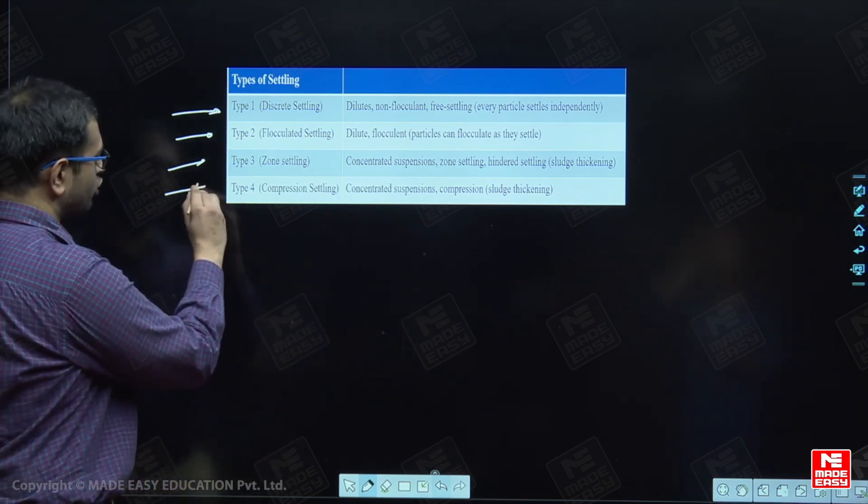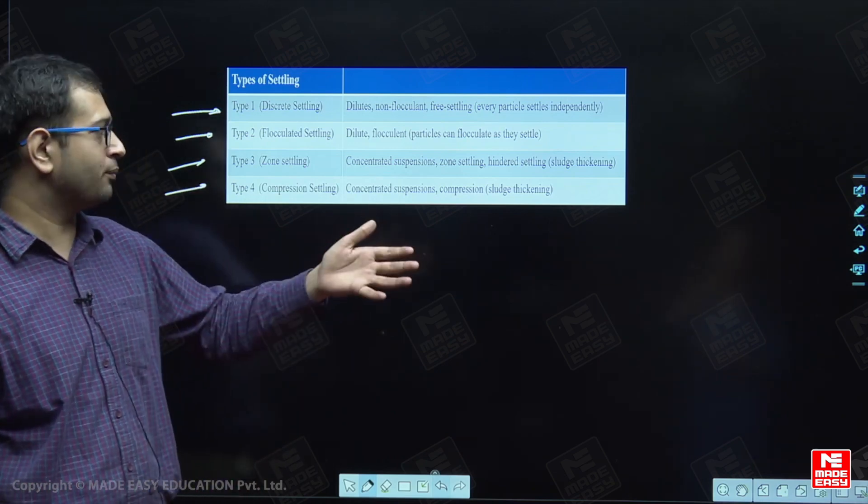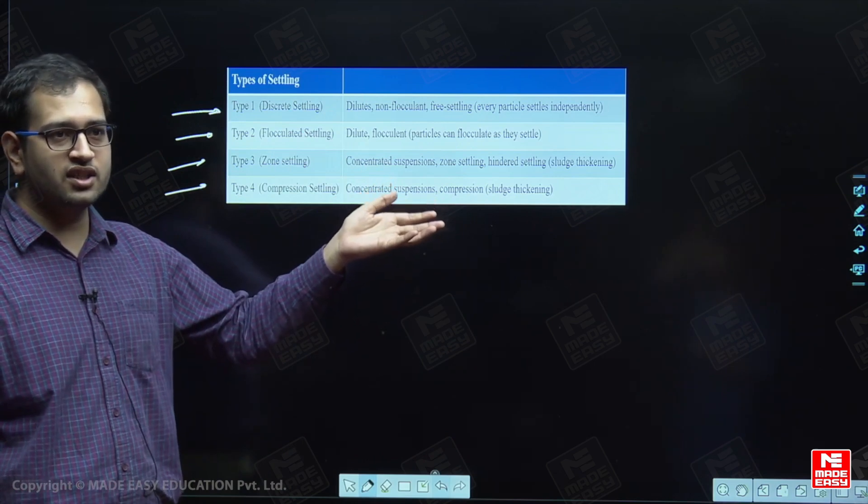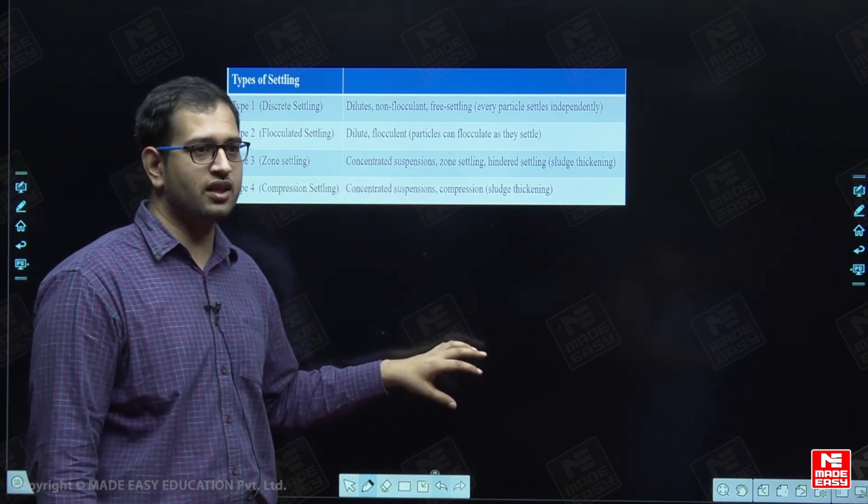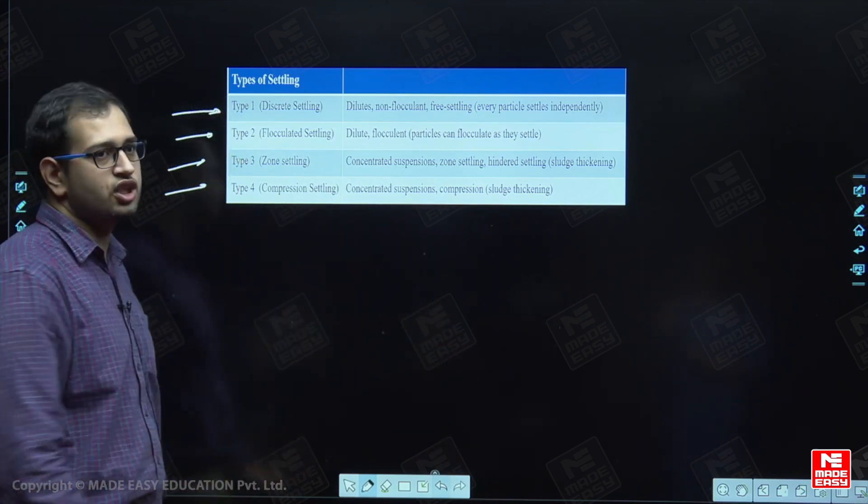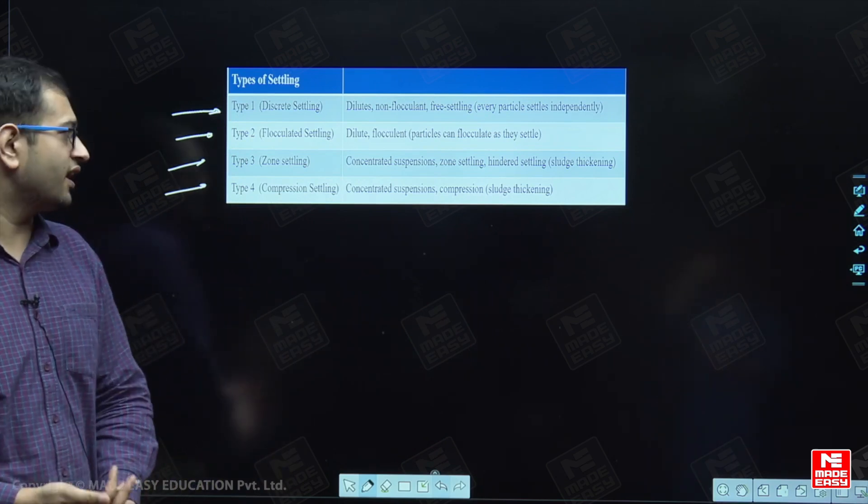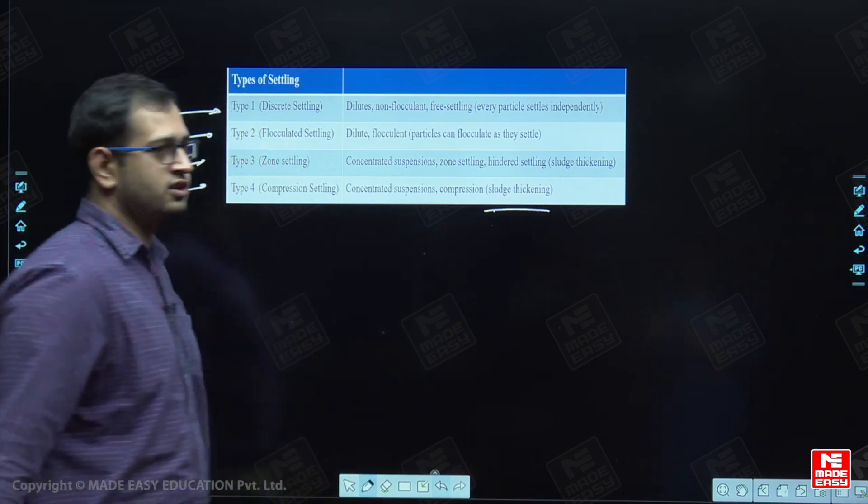And in type 4 settling, also known as compression settling, the weight of the settling particles settling above the concerned particles influence the settling of the particle below it. This is known as compression settling. In compression settling, the concentration of the particles is very high. Thus, it is generally used in sludge thickening and such processes.